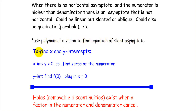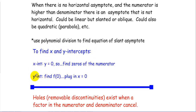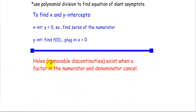To find x-intercepts, plug 0 in for y. To find y-intercepts, plug 0 in for x. Holes — also called removable discontinuities — exist when a factor in the numerator and denominator cancel.